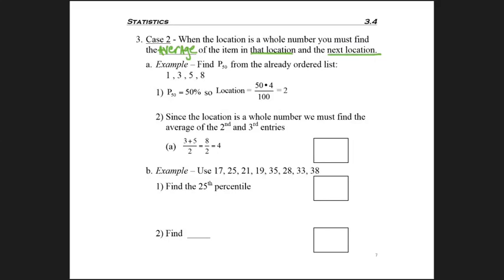Let's take the first example. We want to find P50, and our list is already in order, so we don't need to worry about that step. We launch right into the formula: take 50 because that's the percentage, times 4 because there's 4 items in the list, and divide by 100 because we always divide by 100. In this case we get 2.